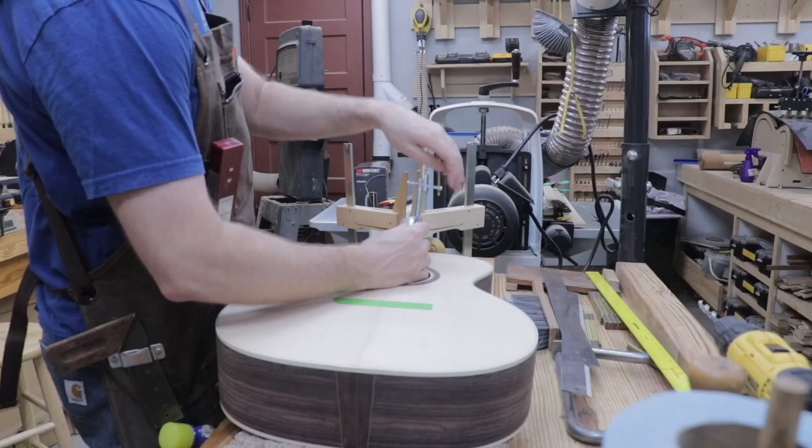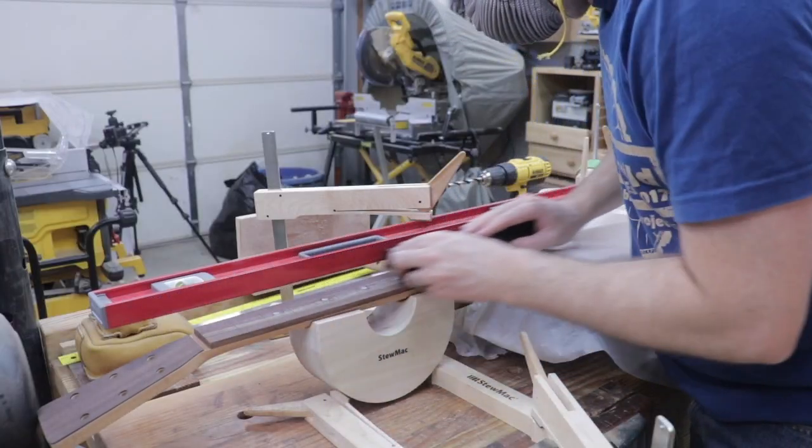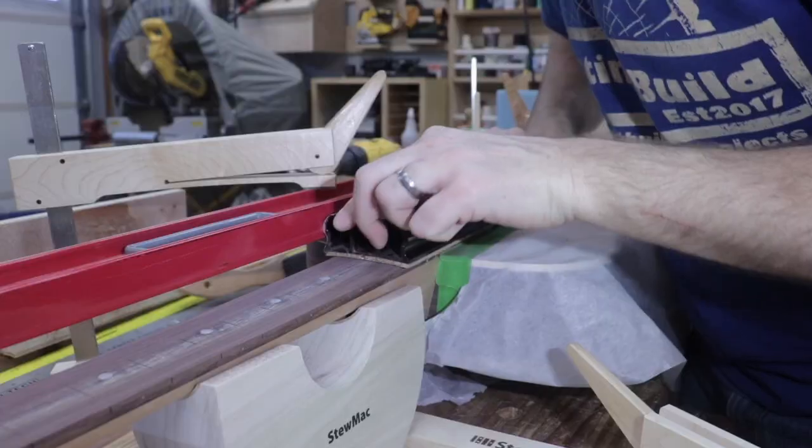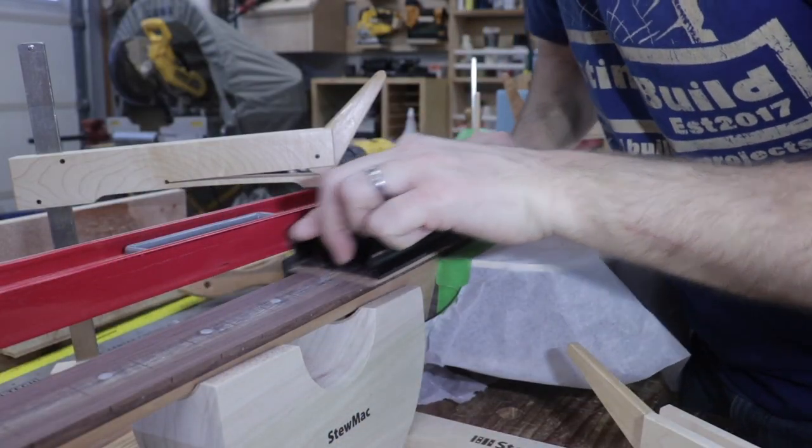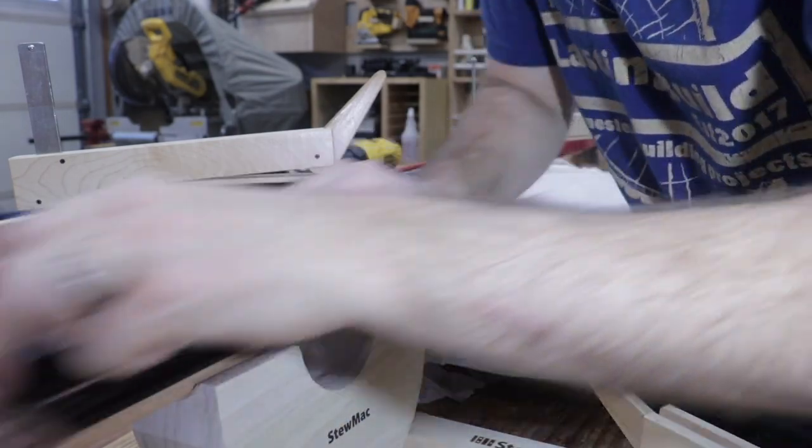Once the neck was attached and the fretboard glued to the soundbox, I began leveling and radiusing the fretboard. I chose a 12-inch radius for my fretboard. I think that makes for a very comfortable playing and well-rounded fretboard.